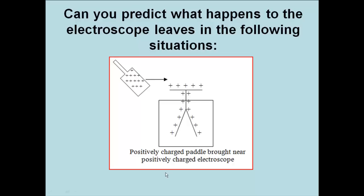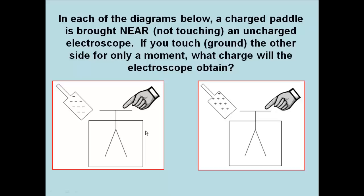So based on this, can you predict what happens to the electroscope leaves in this situation? Pause the video, think about it. Yep, there you go. They spread apart. All right, this positive paddle up here is going to attract any electrons. So when you bring that paddle nearby, the electrons down here run up, making this bottom part even more positive. And those positives don't want to be near each other, so they spread apart.